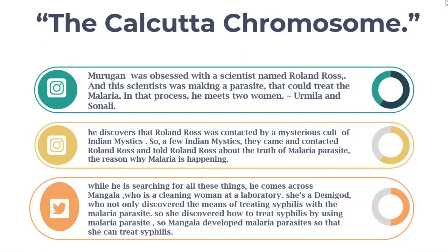In his investigation, Murugan meets two women: Urmila and Sonali. He discovers that Roland Ross was contacted by a mysterious cult of Indian mystics who told him the truth about the malaria parasite. While searching further, Murugan comes across Mangala, a cleaning woman at a laboratory. However, we later learn that she is actually a demigod who discovered the means of treating syphilis using the malaria parasite.